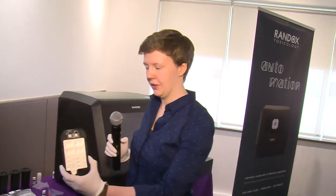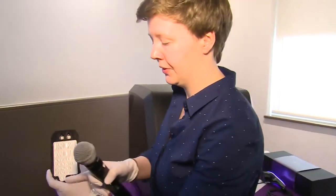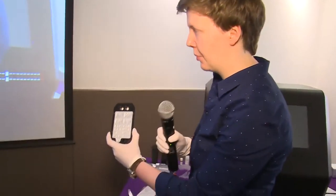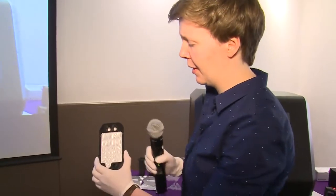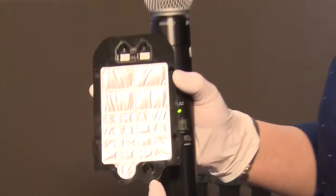This is what it looks like - a foil sealed pouch with two biochips at the top and two sample wells at the bottom. I'm going to prepare this by loading cut-off material in the left-hand well and our sample in the right-hand well.